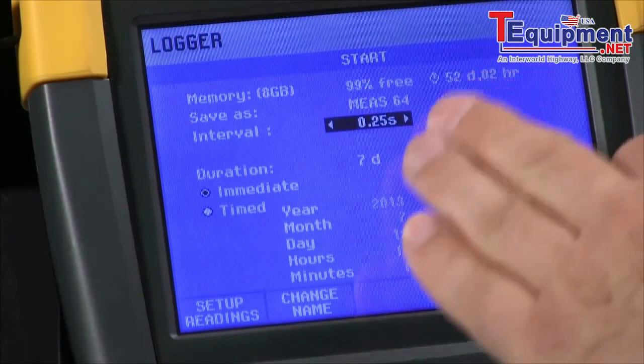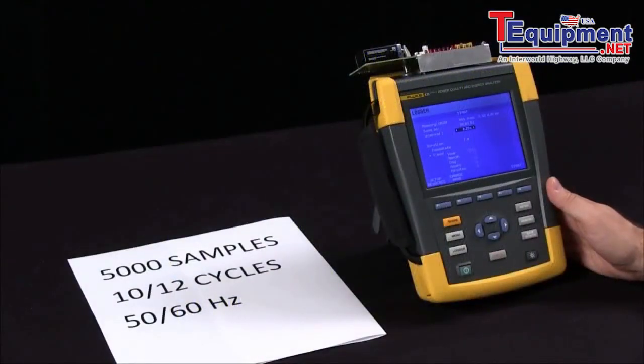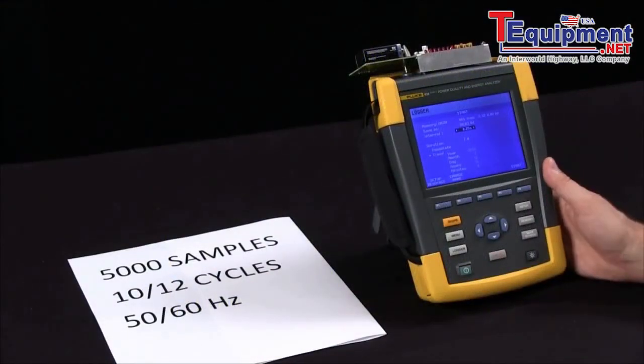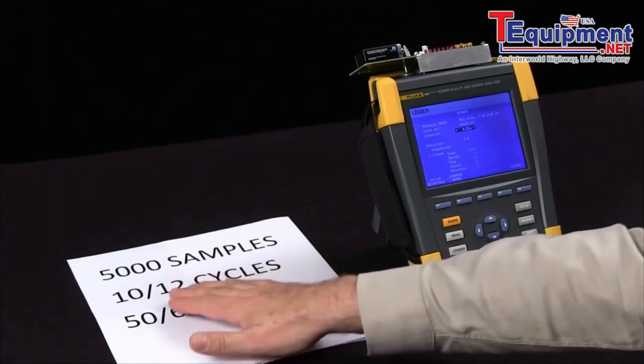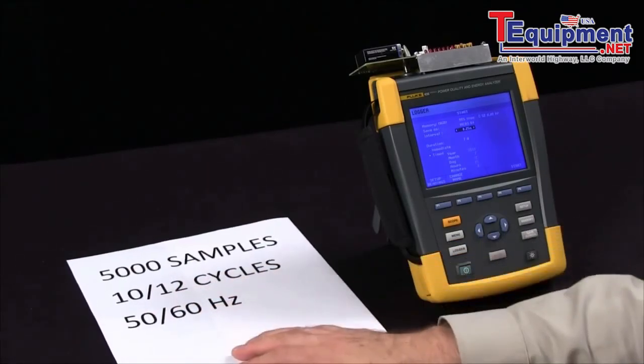The difference is the sample rate here just lets you know how many readings you will take when you're averaging your readings. So basically for every 10 cycles if you're working on 50 Hertz or 12 cycles if you're working on 60 Hertz.